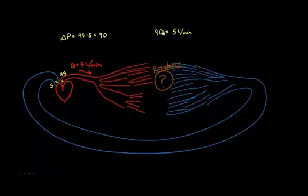So I could say 90 equals 5 liters per minute. Actually, let me take a step back from that. Instead of 90, let me write the units. 90 millimeters of mercury equals 5 liters per minute. That was my flow. That's my Q. And I've got delta P here. And my resistance is the unknown, so I'll just leave that as R.